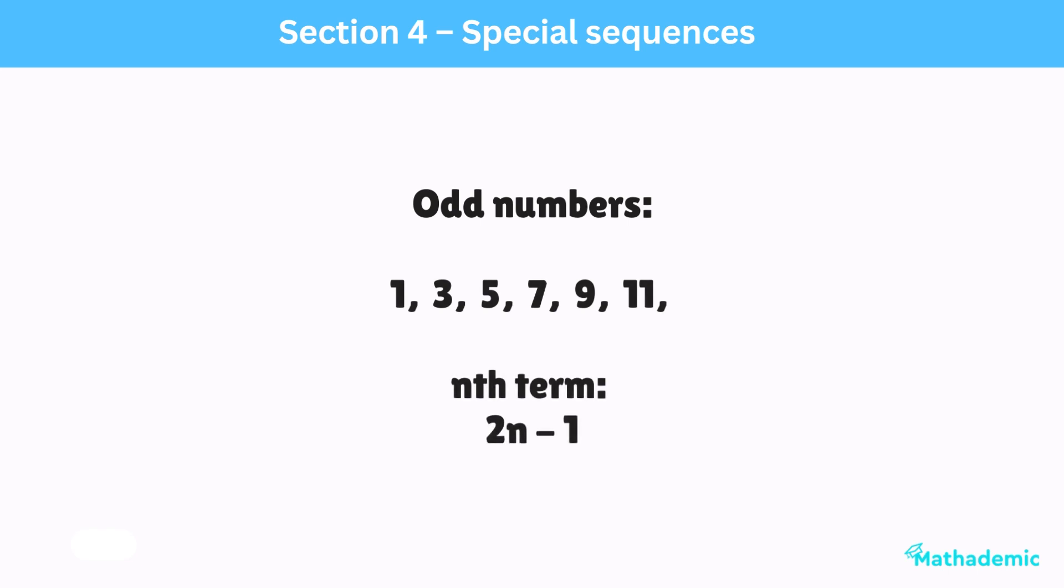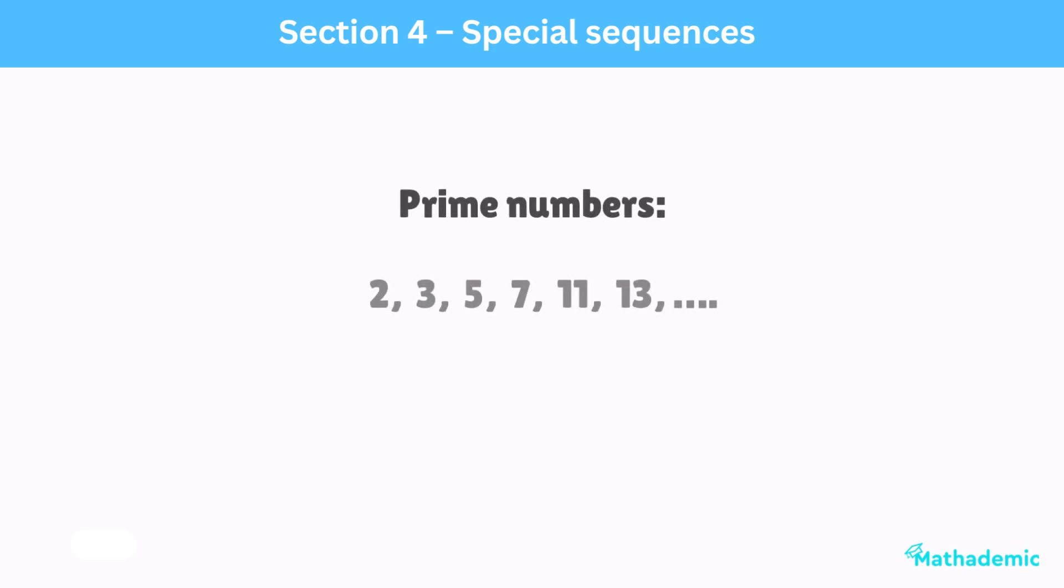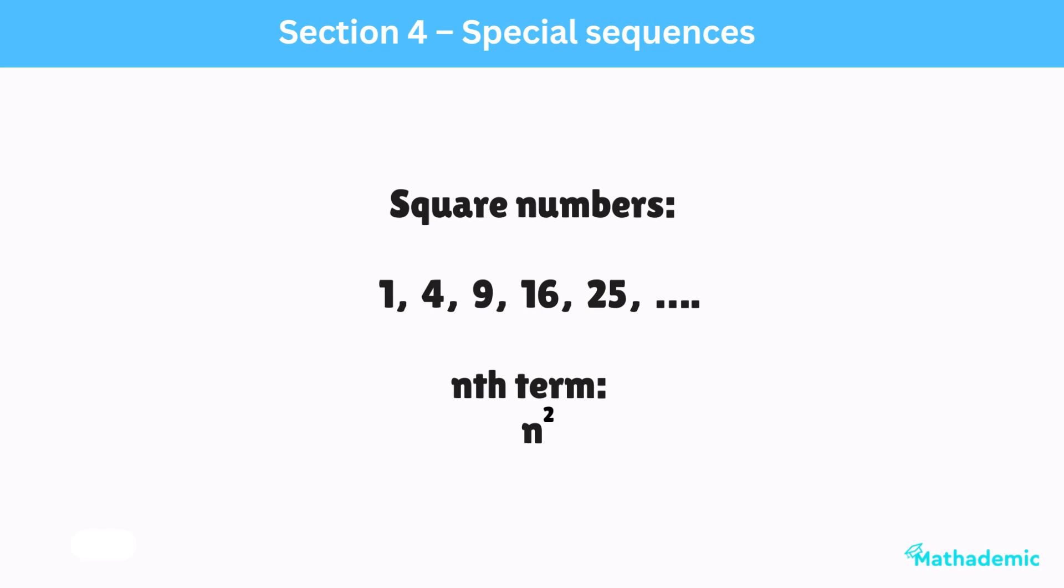You should also be able to recognise the sequence of prime numbers: 2, 3, 5, 7, 11, 13, and so on. The sequence of Fibonacci numbers, 1, 1, 2, 3, 5, 8, 13, is the sequence where each term is the sum of the previous two terms. The square numbers, 1, 4, 9, 16, 25, have nth term n squared.